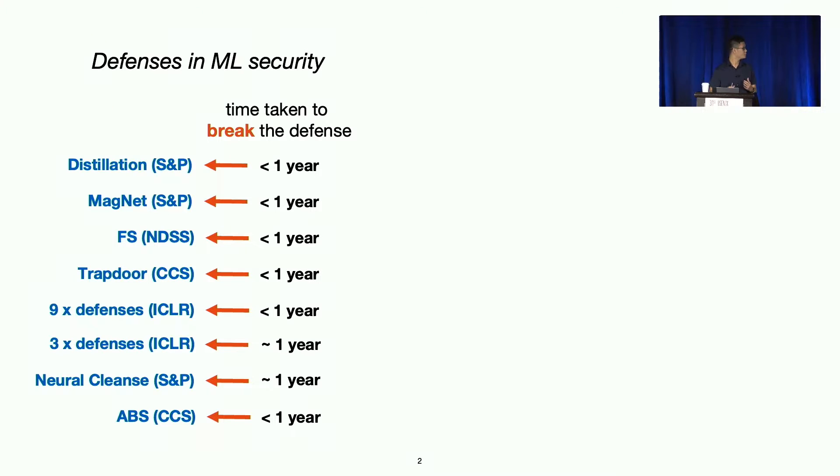To start this talk, I'm going to show you this chart. On the left are some defenses in ML security. On the right are the time it takes for these defenses to be broken by a later stronger attack. We all noticed that defense in ML security doesn't last for a very long time. They're quickly broken by strong adaptive adversaries.